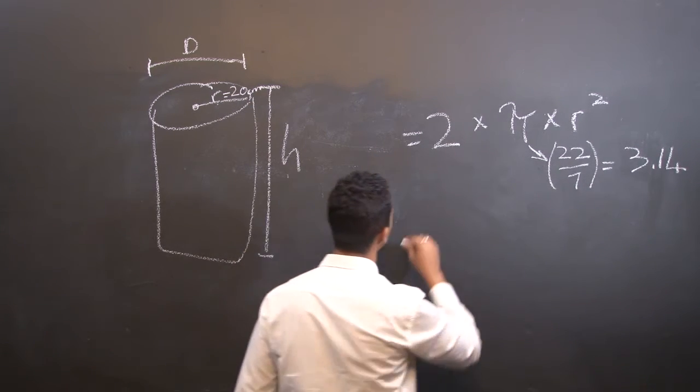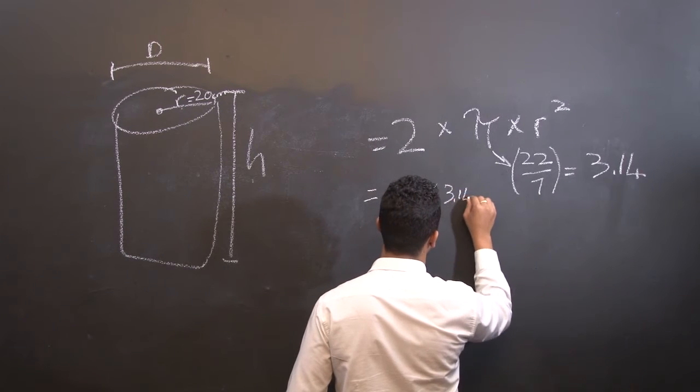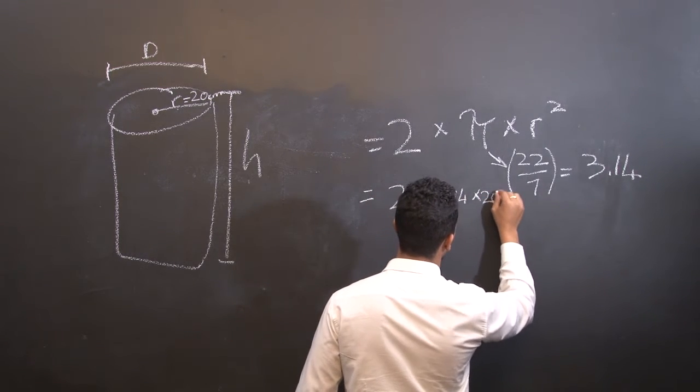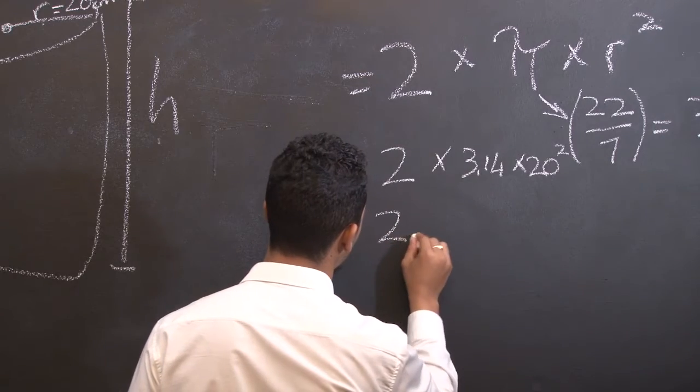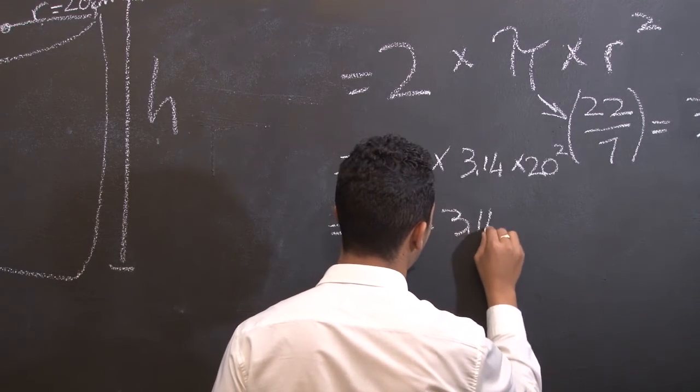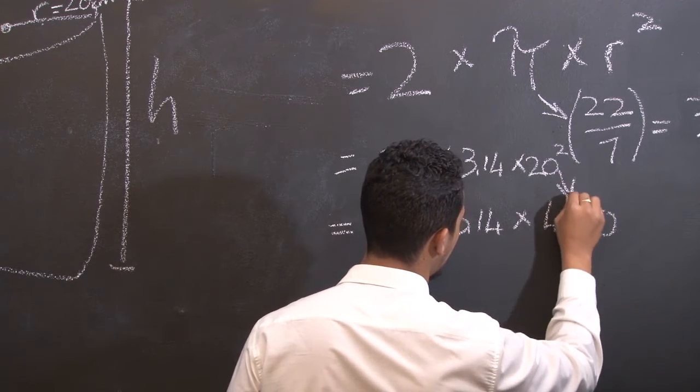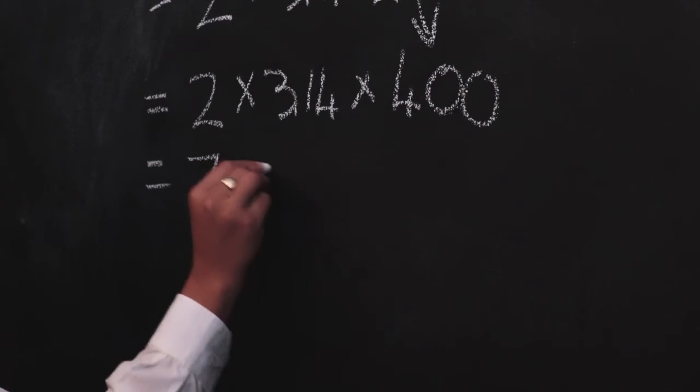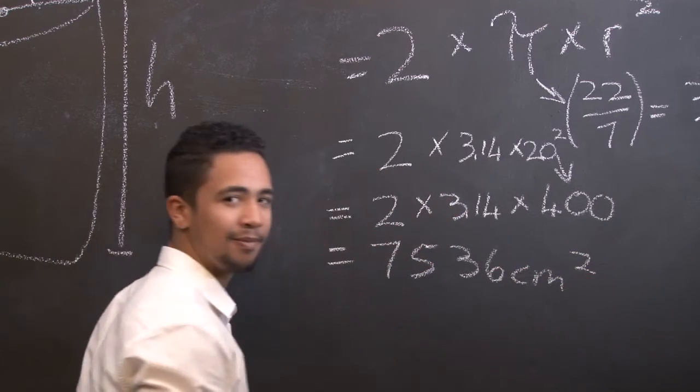So if we substitute, we end up with 2 times by 3.14 times by the radius, which is 20 squared. That will give you 2 times 3.14 times by 400. Using your calculator now, your answer is 7536 centimeters squared. So that was the formula to calculate the area of a cylinder.